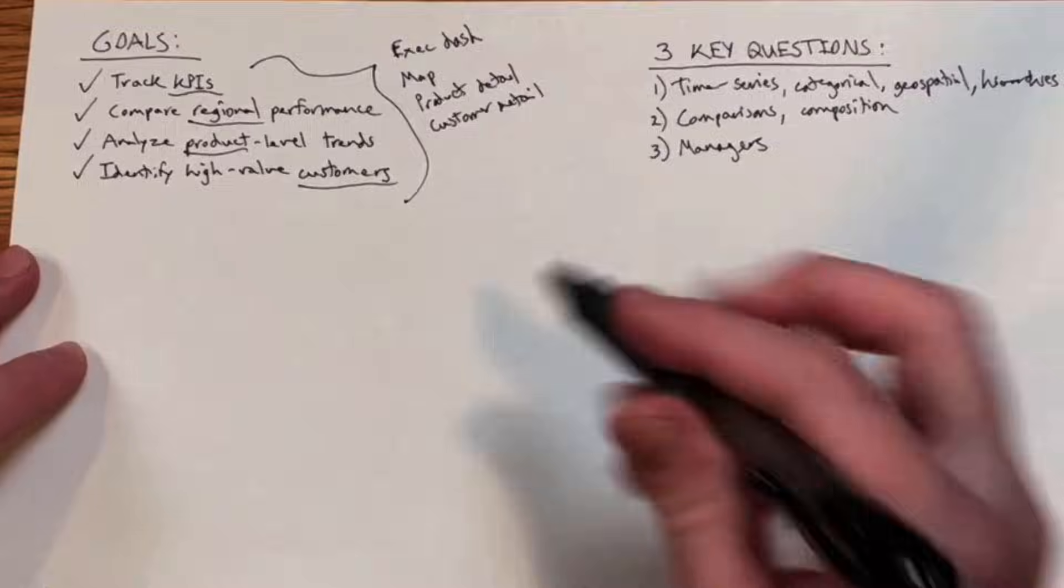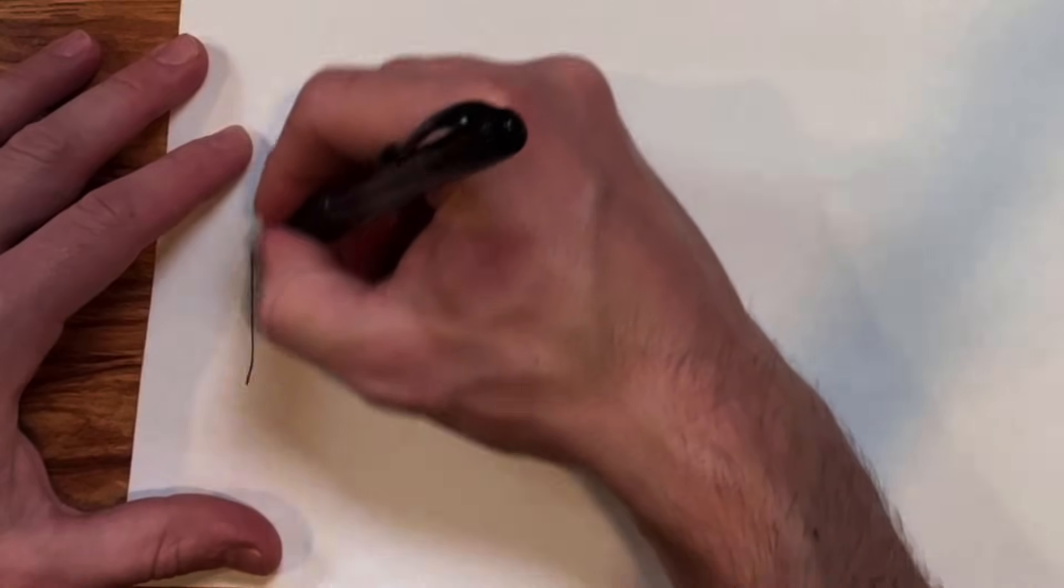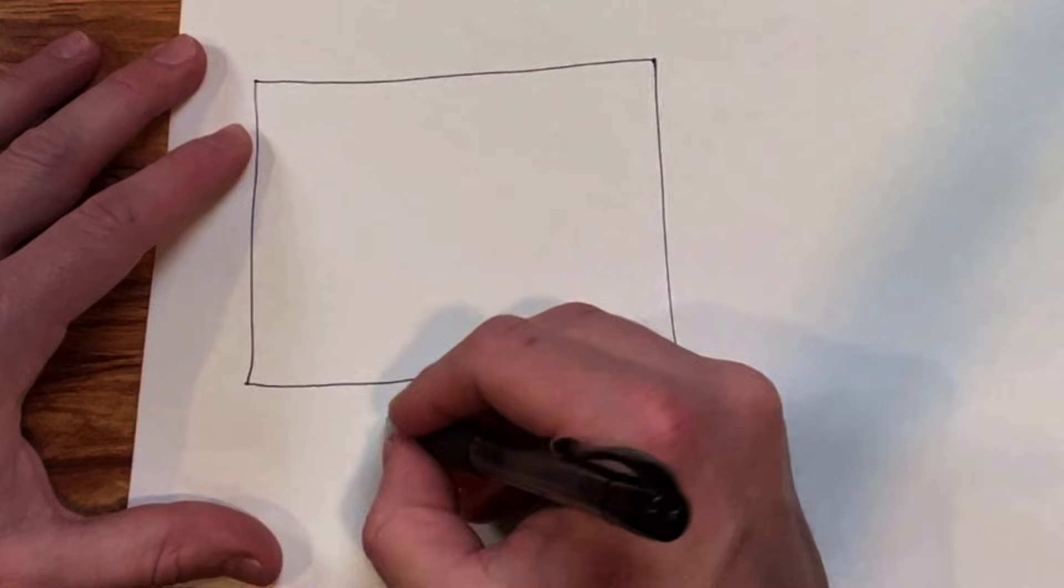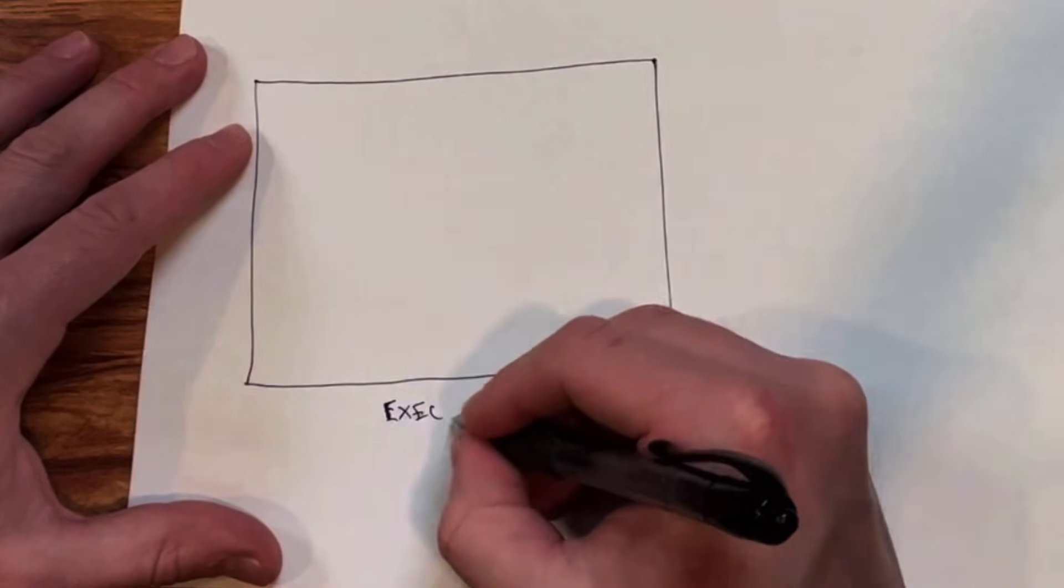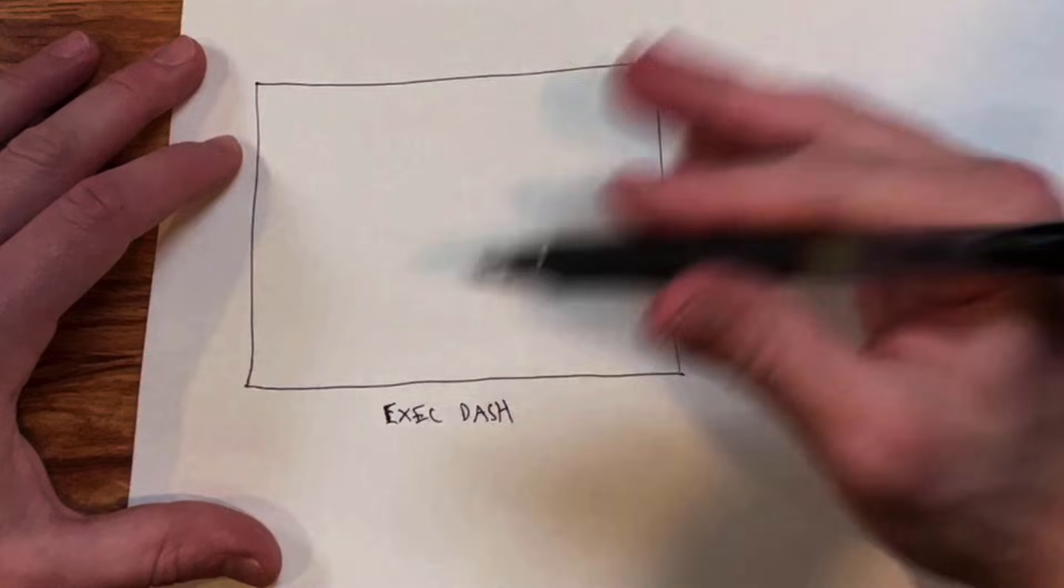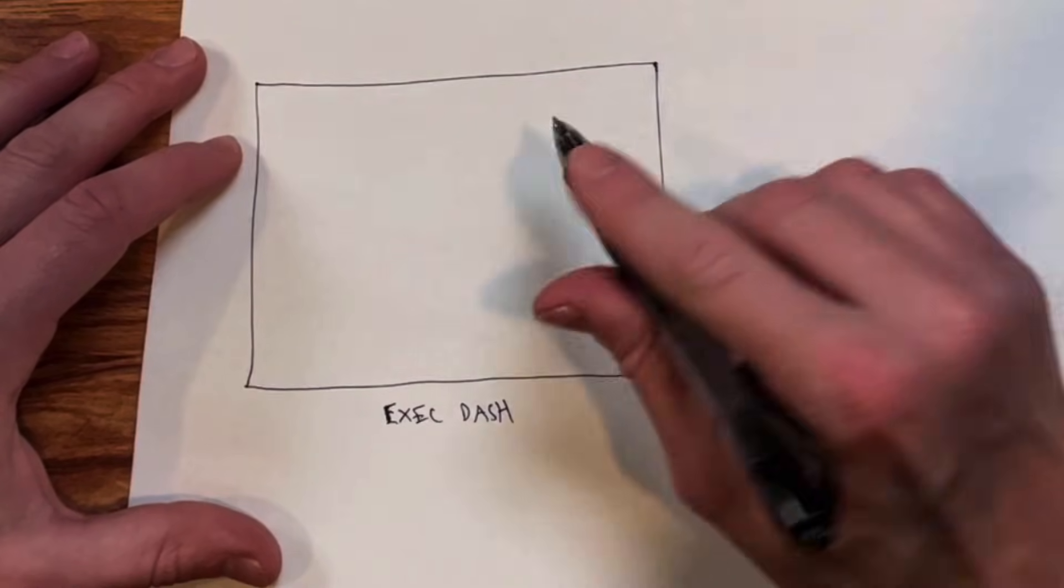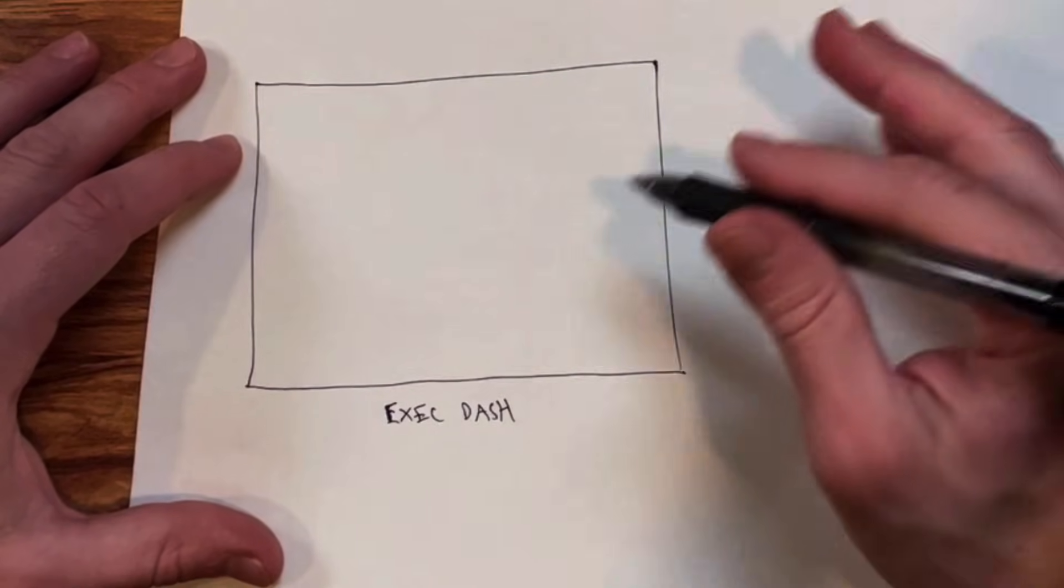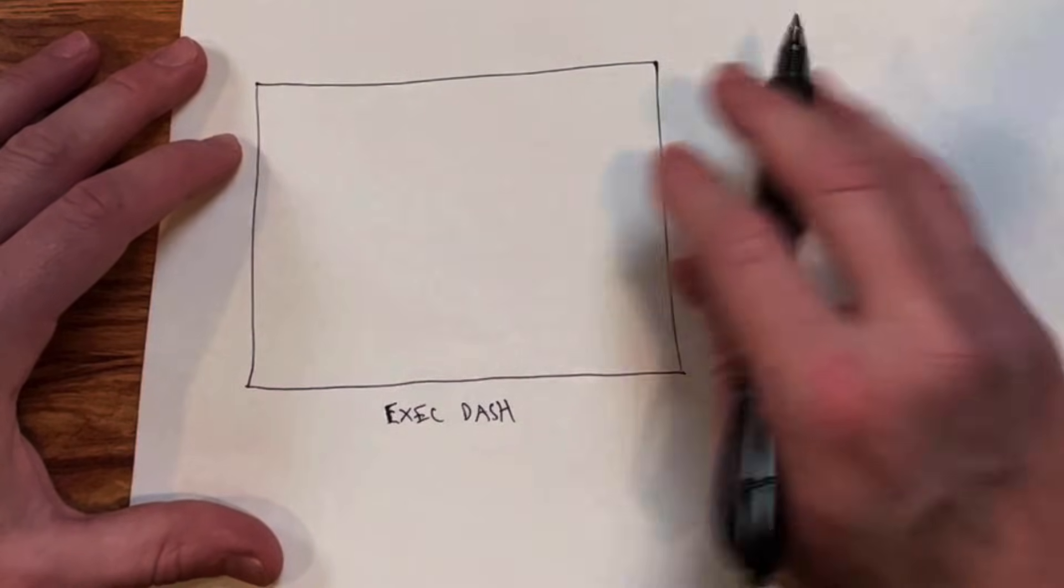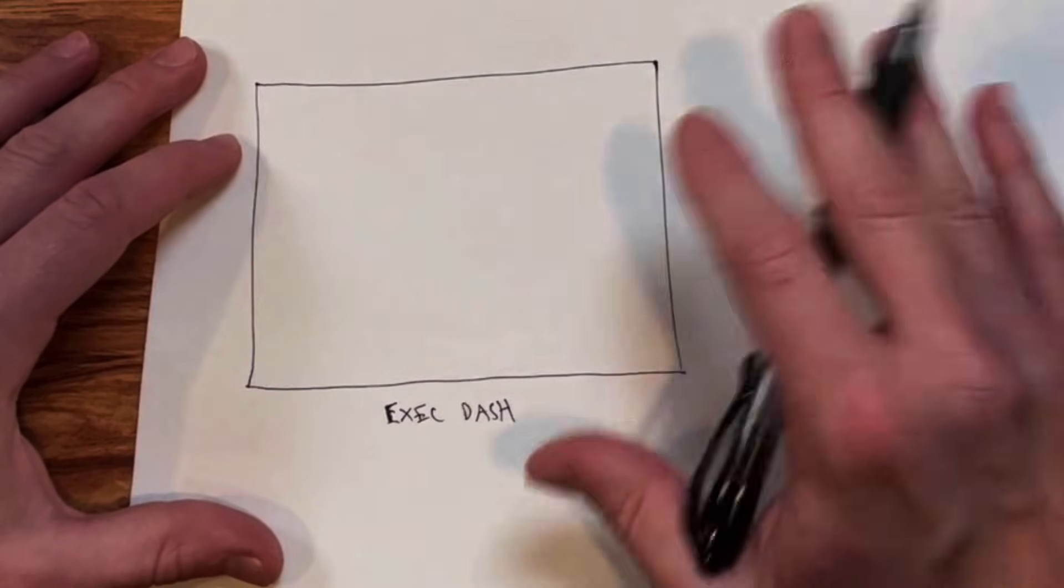Next up I want to start visualizing what this might actually look like. I'm going to start with the exec view or the exec dashboard here. This is typically an iterative process. You may very well have no idea what the dashboard is going to look like. In this case I've got a pretty clear idea of what I want this to look like, but just know that it won't always be this smooth or this polished right out of the gate.